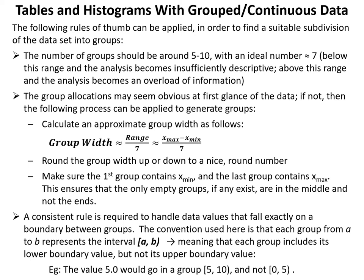To group the data, the following rules of thumb apply. First, the number of groups should be around five to ten, with an ideal number around seven. Below five groups the analysis is insufficiently descriptive; above ten it becomes an information overload. So we aim for between five and ten groups, ideally around seven.